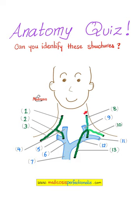The left internal jugular trunk with the left subclavian trunk will join together to give the thoracic duct, which drains into the junction between the left internal jugular vein and left subclavian vein. These two veins join to give the left brachiocephalic.